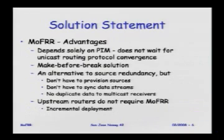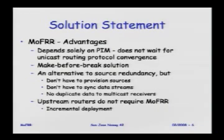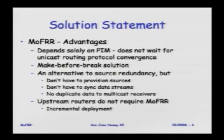We call it multicast-only fast reroute because the single protocol solving the problem is not going to depend on other parts of the system — it's going to solely depend on PIM. PIM doesn't have to wait for the unicast routing protocol to converge; it makes decisions unilaterally. It's make-before-break, and it's an alternative to the source redundancy model where the redundancy is done inside the network. You don't have to provision extra sources or sync data streams, and duplicates won't be delivered to receivers.